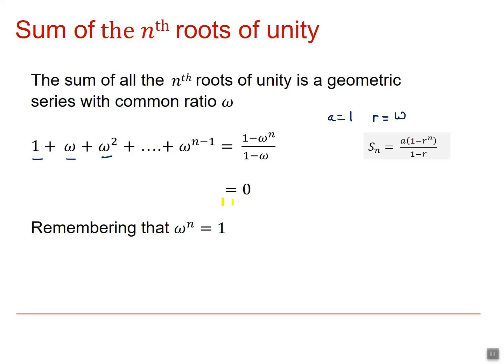But that's equal to 0 because we know that omega to the n is equal to 1. So if we add all of our nth roots of unity together, whatever the value of n, we will always get 0.